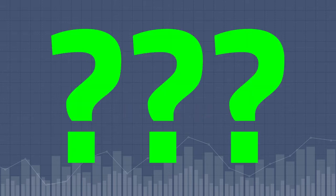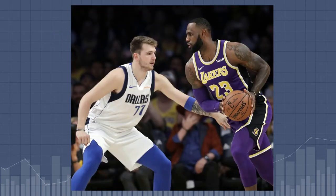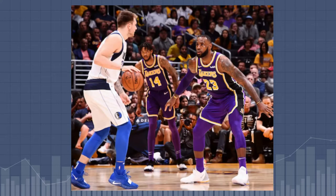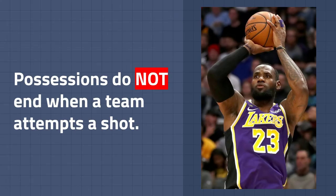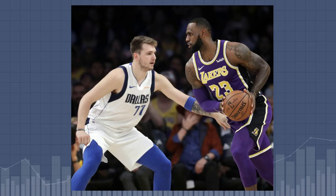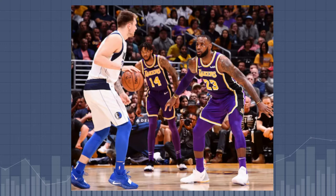What exactly is a possession? Basically, anytime a player on your team is dribbling or handling the ball, your team has possession. Here, the Lakers have possession. A possession will continue until the other team has full control over the ball, so the Lakers' possession doesn't end until the Mavericks take control. It's crucial to remember that possessions do not end when a team attempts a shot, because a team can rebound their own missed shot, thus continuing their possession. A team's possession continues until their opponent controls the ball.